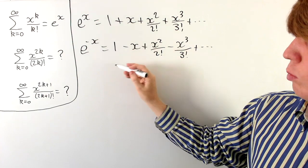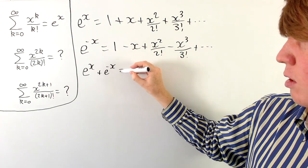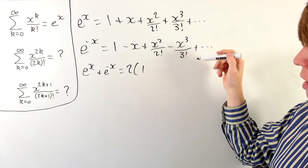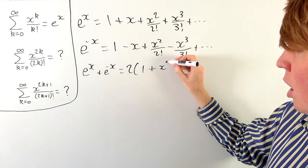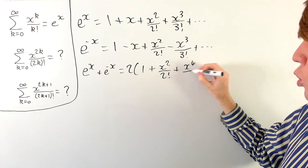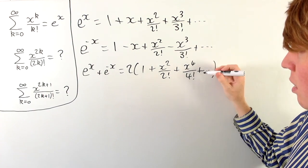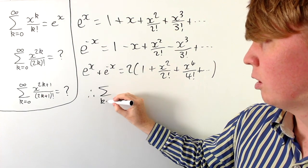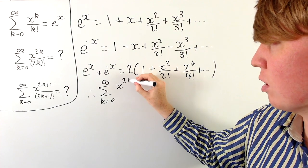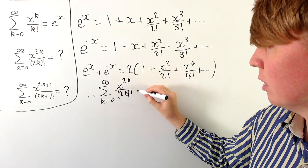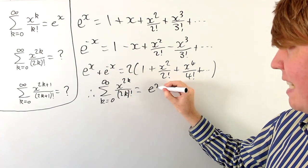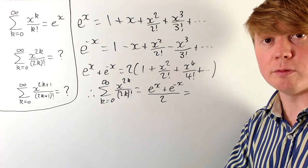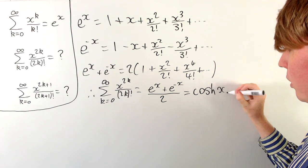If we add e to the x and e to the negative x together, the x and negative x cancel out, getting rid of all our odd terms. The x cubed terms cancel as well. But we still have two lots of x squared over 2 factorial, two lots of x to the 4 over 4 factorial, and so on — twice the sum of all even terms. Dividing by 2, the sum from k equals 0 to infinity of x to the 2k over 2k factorial equals one half times e to the x plus e to the negative x, which is hyperbolic cosine of x.